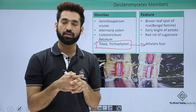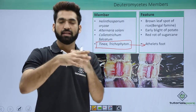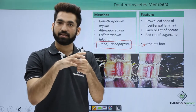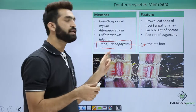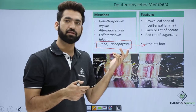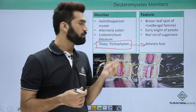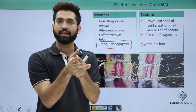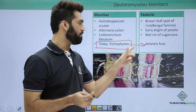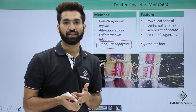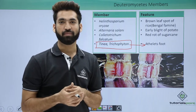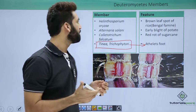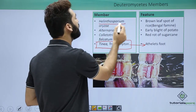When moisture gets deposited between the toes, the fungus — Tinea or Trichophyton — attacks and grows there, causing athlete's foot. There are many species of Tinea, like Tinea rubrum. Remember, athlete's foot is not just limited to athletes; it happens in normal human beings too when moisture is deposited between the fingers of the feet.